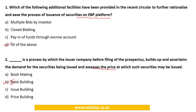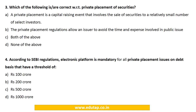MCQ 2: Dash is a process by which an issuer company, before filing the prospectus, builds up and ascertains the demand for the securities being issued and assesses the price at which the securities may be issued. The answer is B — Book Building. MCQ 3: Which of the following is correct with regard to private placement? Both (A) private placement involves sale to a select small number of investors, and (B) it allows issuers to avoid time and expense of a public issue, are correct. Answer: C.